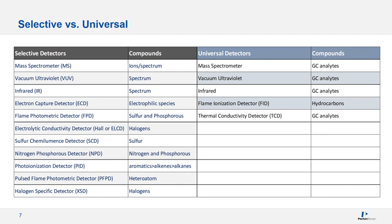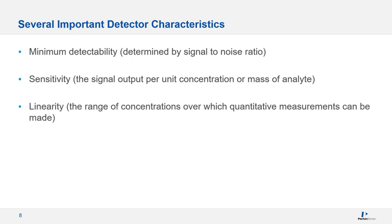Before we discuss some common GC detectors, I would like to discuss some detector specifications which are particularly important, because detector performance can determine whether an analysis can be performed successfully for your requirements. The first is the minimum detectability, which people also refer to as the minimum detection limit — defined as the minimum concentration of analyte that can be discriminated from the noise, determined by the signal-to-noise ratio. The next item is sensitivity, and finally linearity. We will discuss these in detail in coming slides.